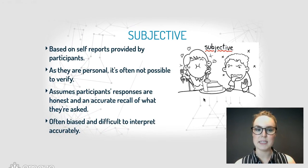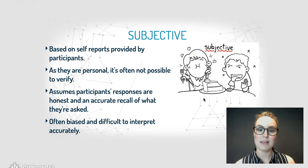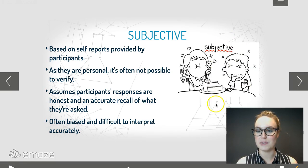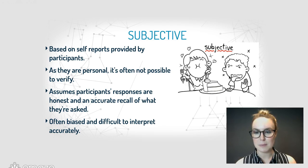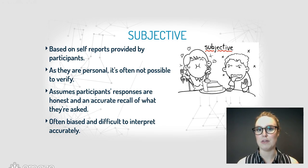Subjective data, on the other hand, are based on self-reports provided by participants themselves. They're personal and it's often not possible to verify them. You can see in the picture — two children eating the exact same piece of cake and they have two very different interpretations of whether it tastes good.